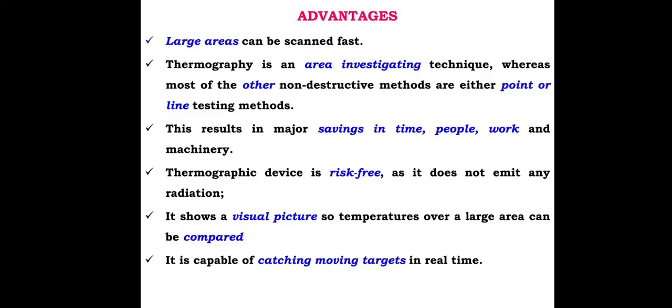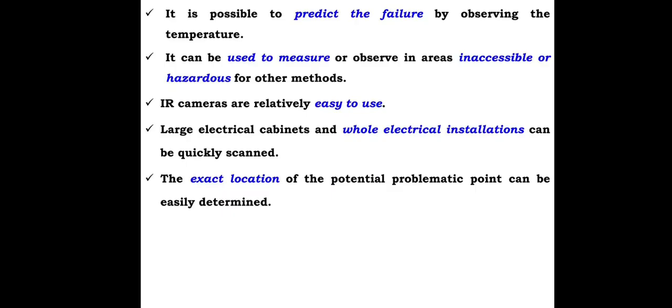Advantages. Large areas can be scanned fast. Thermography is an area investigating technique whereas most of the other non-destructive methods are either point or line testing methods. This results in major savings in time, people, work, and machinery. Thermography devices are risk-free as they do not emit any radiation. They show a visual picture so temperatures over a large area can be compared. It is capable of catching moving targets in real time. It is possible to predict failure by observing the temperature. It can be used to measure or observe in areas inaccessible or hazardous for other methods. IR cameras are relatively easy to use. Large electrical cabinets and whole electrical installations can be quickly scanned. The exact location of the potential problematic point can be easily determined.